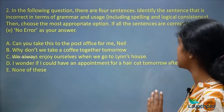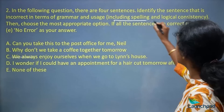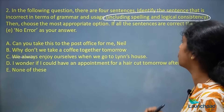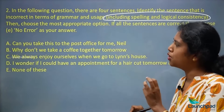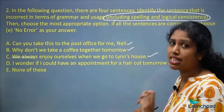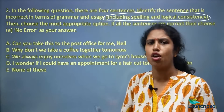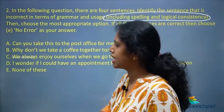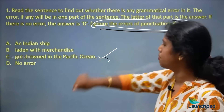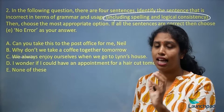In the next question format, there are four sentences. You have to identify the sentence that is incorrect in terms of grammar and usage, including spelling and logical consistency, then choose the most appropriate option. If all sentences are correct, choose 'no error.' There is an error in only one sentence. Unlike the previous question which told us to ignore punctuation errors, here we must also look for spelling and logical errors.